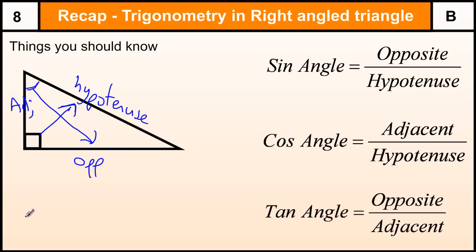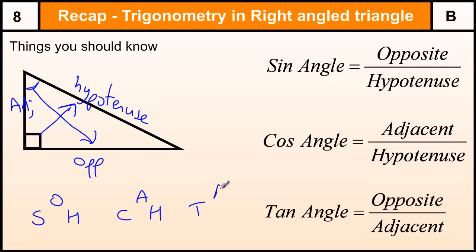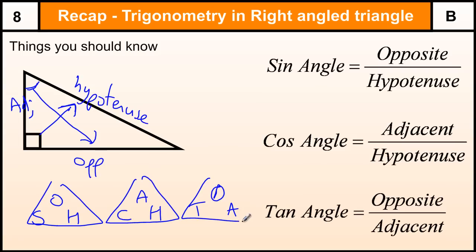Another thing that can help us is a formula triangle, if we are trying to remember the SOH-CAH-TOA formulas and how to use them. If we write them out and put them into triangles, then if you are familiar with speed-distance-time triangles, that shows you how to manipulate the formulas. I will use that when going through some examples in a minute.